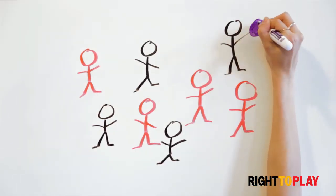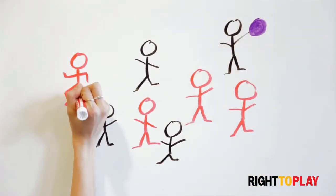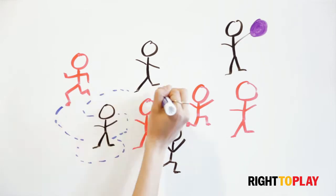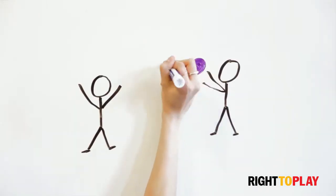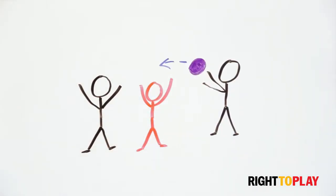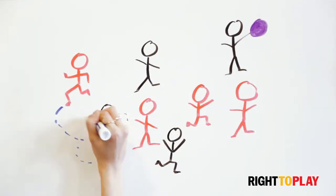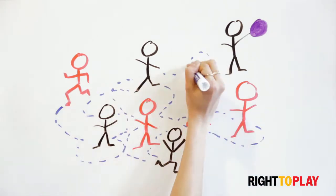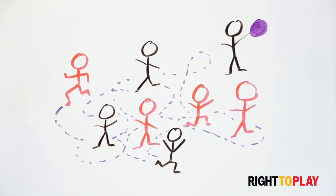Step 2: Team A will try to keep ownership of the ball while Team B will try to intercept the passes. Step 3: Participants can move around the play area only when they are not holding the ball. If they are holding the ball, they cannot take any steps.